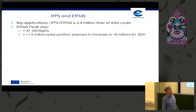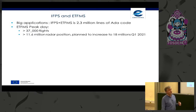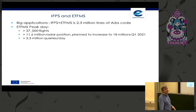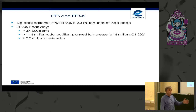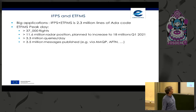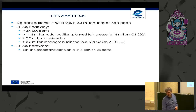We have around 8.6 million radar positions, planned to increase to 18 million in one year because we will add new sources of position — namely ADS-B data from new systems. From external users — aircraft operators like Air France, British Airways, airports, air traffic control centers — they all query our systems for data. This results in about 3.3 million queries per day at peak, and we publish more than 3.5 million messages per day through publish-subscribe mechanisms such as MQ.